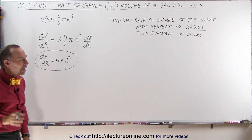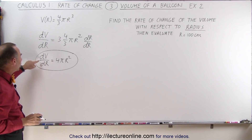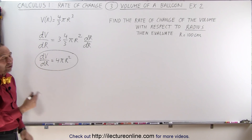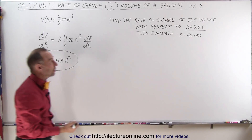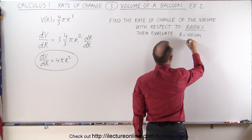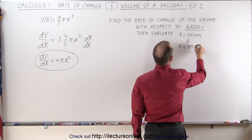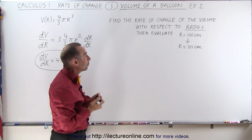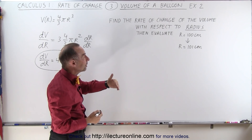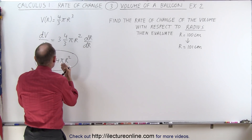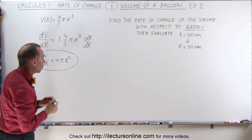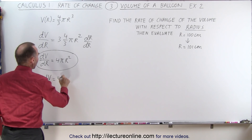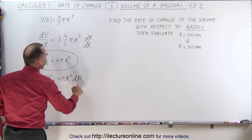Now let's get a feel for how that works. How fast is the volume changing when the radius changes? Let's find out how fast it changes when the radius changes from 100 centimeters to 101 centimeters. We'll calculate what the volume would be at each radius, find the difference, and also plug into our equation: the change in volume equals 4 pi r squared times the change in radius.